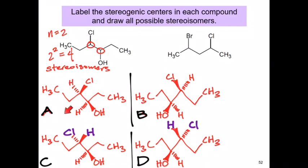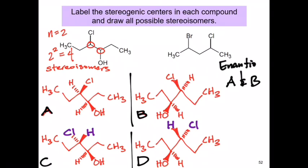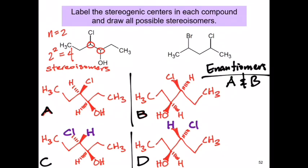So we know that A and B are enantiomers, and C and D are also enantiomers of one another. We have a total of four stereoisomers, which we calculated. The first pair of enantiomers, A and B, are diastereomers of C and D.